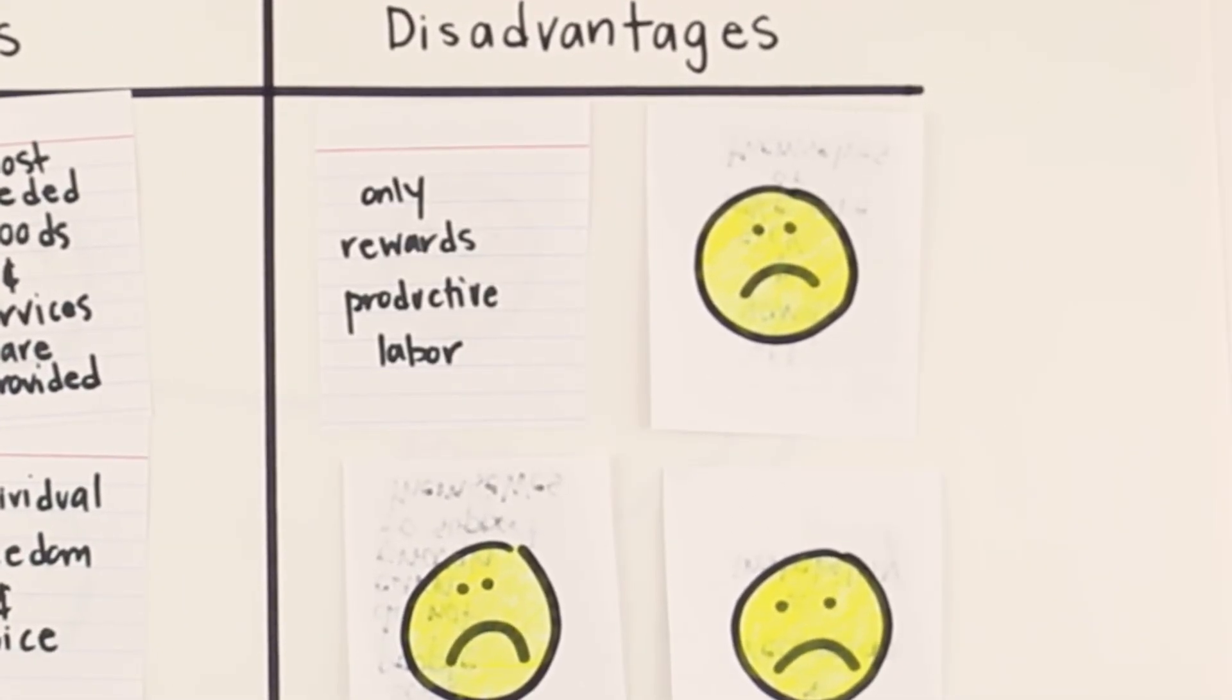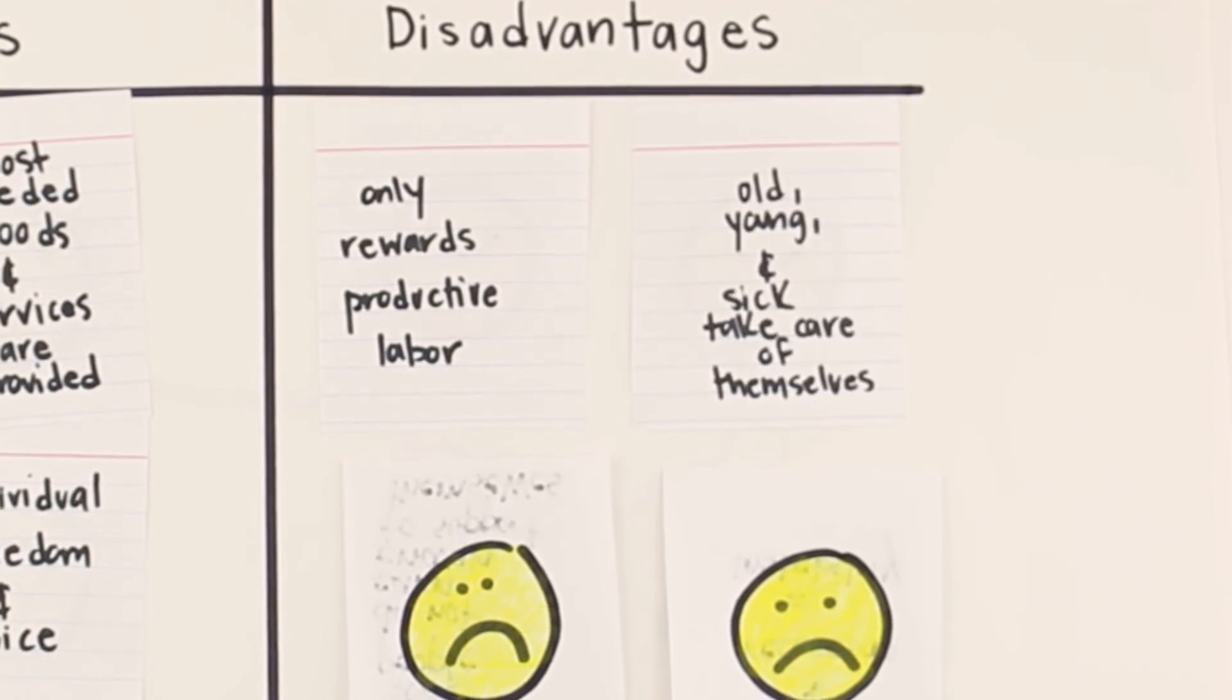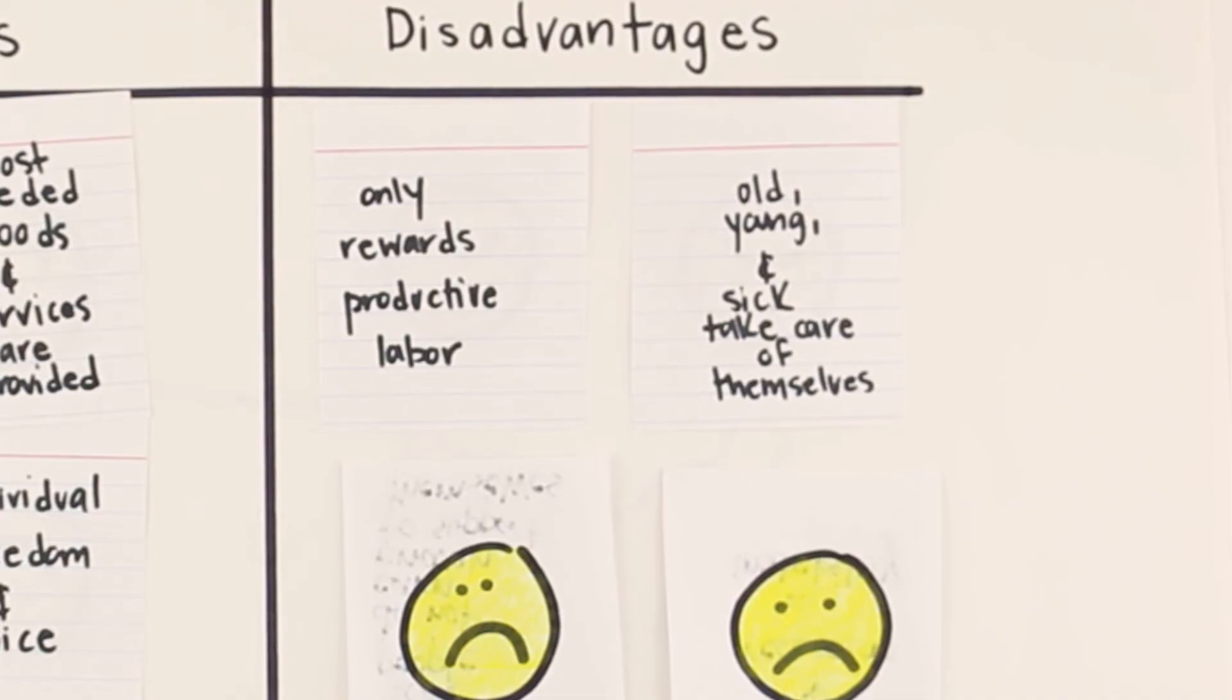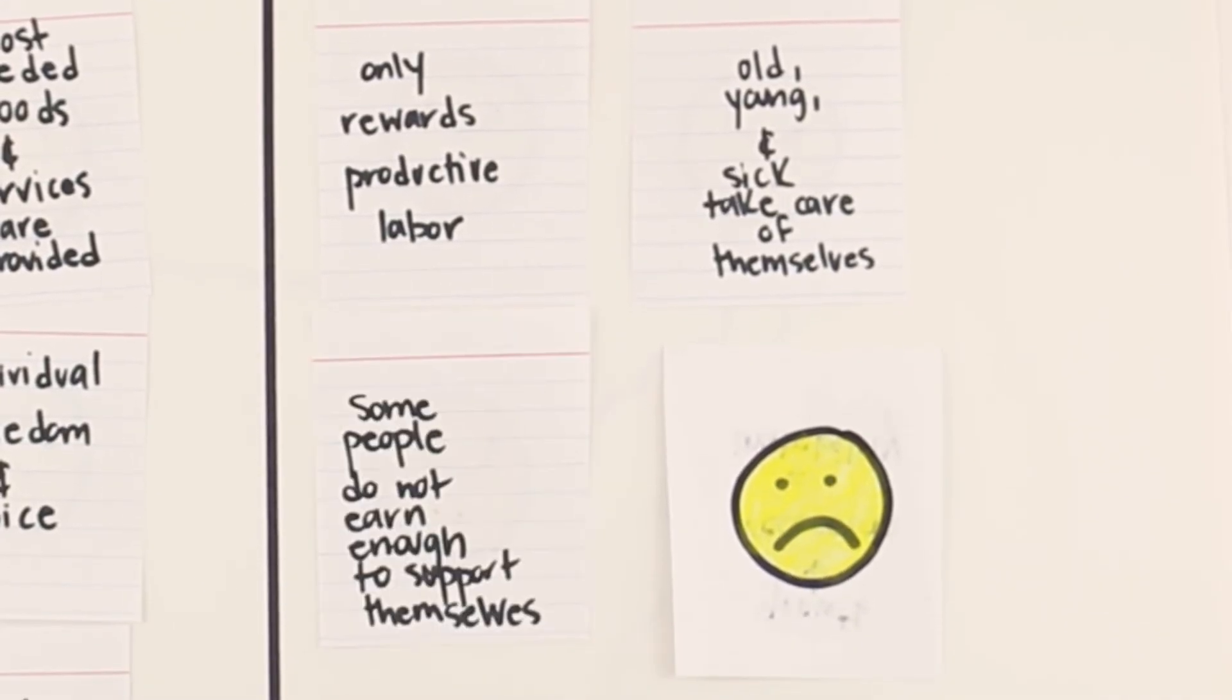Disadvantages include the economy only rewards productive labor. In other words, it doesn't meet the needs of those too old, too young, or too sick to take care of themselves. The rewards of wealth are also uneven. Society produces many luxury goods, but there are still people who do not make enough money to support themselves.